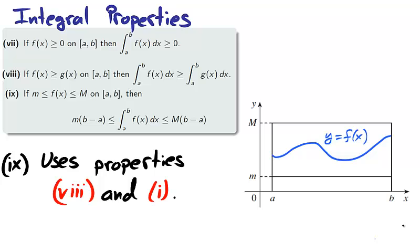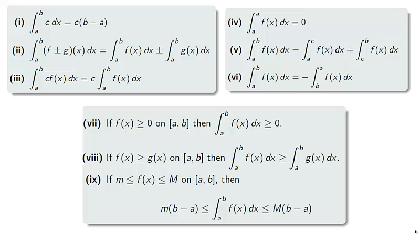Property 9 is especially useful when paired with the extreme value theorem from section 3.1. Functions which are continuous and differentiable on a closed interval always have an absolute maximum big M and an absolute minimum little m. Remember, we use the closed interval method to find those values. Once we find those values, we can approximate the integral for f on the interval a to b.